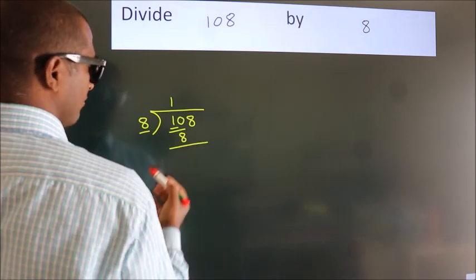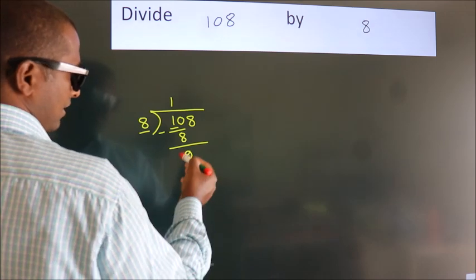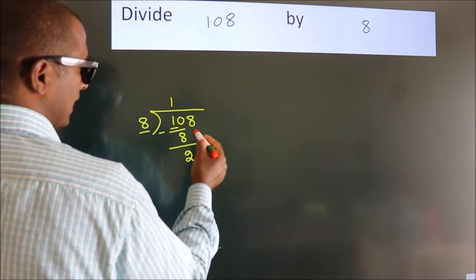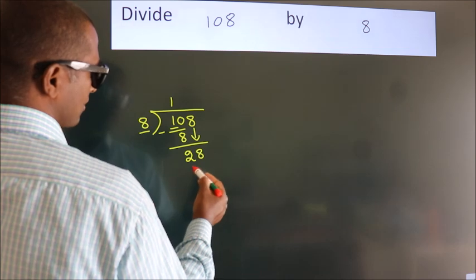Now we should subtract. We get 2. After this, bring down the beside number. So 8 down. So 28.